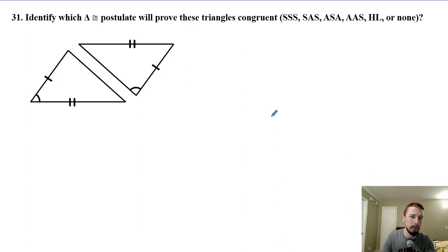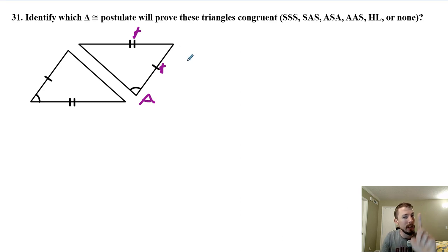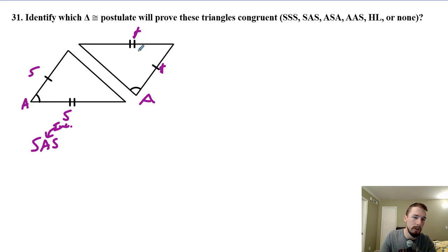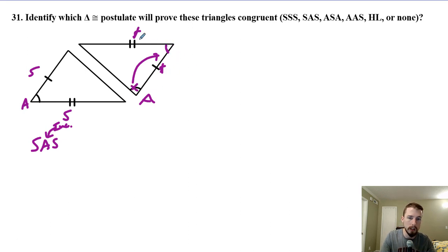Number 31: what postulate are we using? We have angle-side-side — the donkey postulate. Does the donkey postulate ever work? No, unless we have a right angle — then it's called the hypotenuse-leg theorem. So automatically I know this one's not going to work because that's not a right angle, it's just an angle congruent to another one. Over here we have side-angle-side where the angle is included in between the sides. So we have side-angle-side on one and angle-side-side on the other. This would be true if the angle were moved up here, but it's not — so our answer would be none.